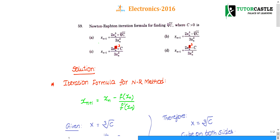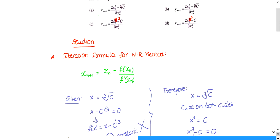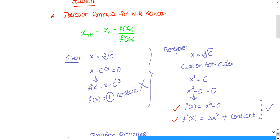First, we will see what is the iteration formula for the NR method. Newton-Raphson method is also known as the NR method. This NR method is very important among all the numerical methods. In the numerical methods chapter, among all the methods, NR method is the most important and frequently asked question method.